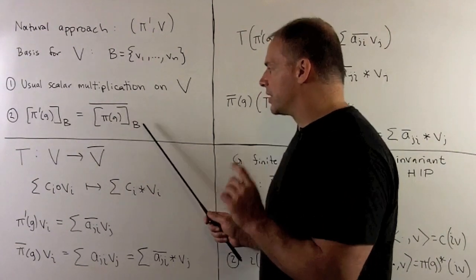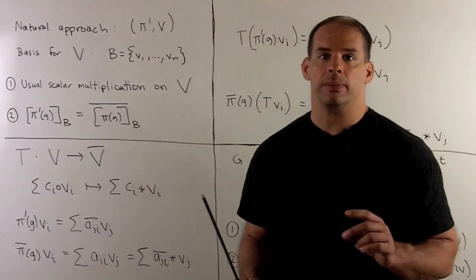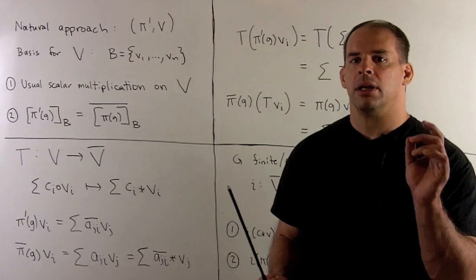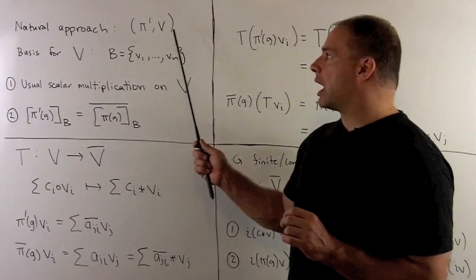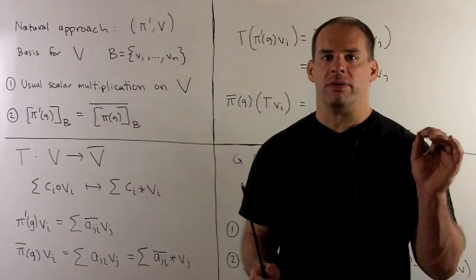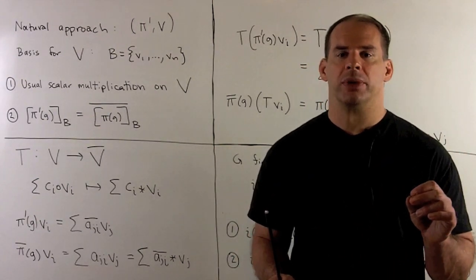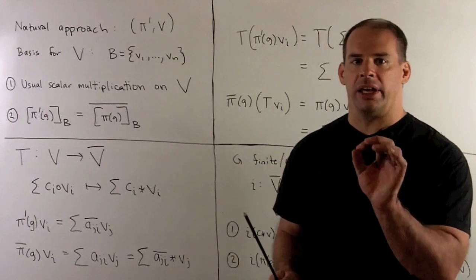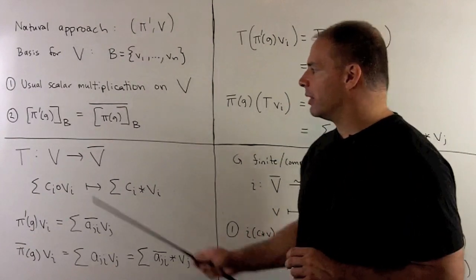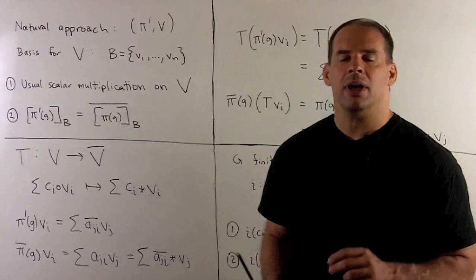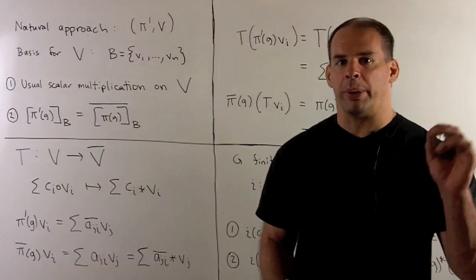Straightforward to see that this gives us a representation of G. Now, I want to show that pi prime and pi bar are equivalent representations. What we're going to need is a linear map T, which is an isomorphism from V to V bar, that also intertwines our group actions.